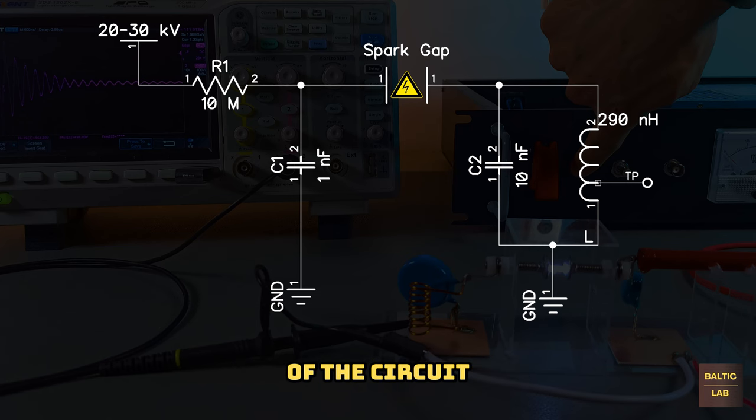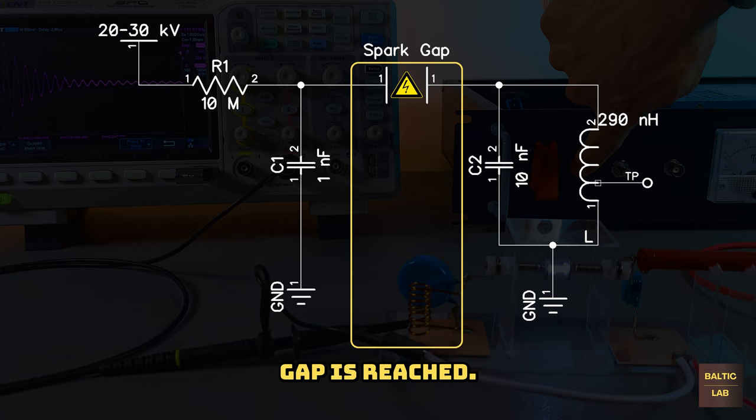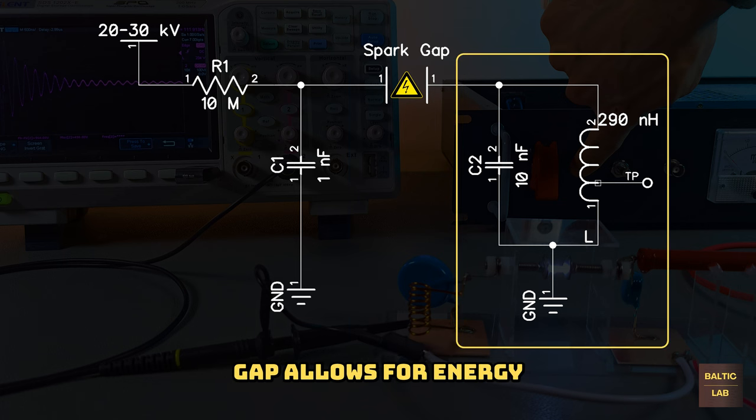Overall, the operation of the circuit can be summarized as follows. When the supply voltage is applied, the charge circuit R1 and C1 charge up until the breakdown voltage of the spark gap is reached. The breakdown of the spark gap allows for energy to flow into the LC resonant tank circuit, which in turn generates a strongly damped signal on the desired resonant frequency.